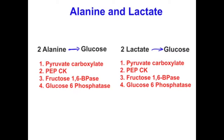Two lactate molecules can also be converted into one glucose molecule. For converting two alanine into one glucose, there are four important enzymes. Alanine is first converted to pyruvate by alanine transaminase, then pyruvate carboxylase converts pyruvate into oxaloacetate. Next, PEPCK in the cytoplasm converts oxaloacetate into phosphoenolpyruvate. Then fructose-1,6-bisphosphatase converts fructose-1,6-bisphosphate into fructose-6-phosphate, and finally glucose-6-phosphatase converts glucose-6-phosphate into glucose.